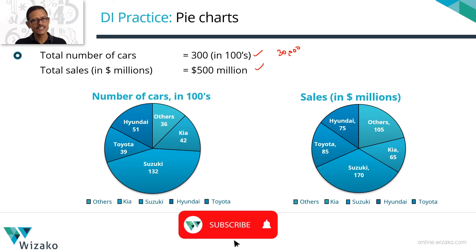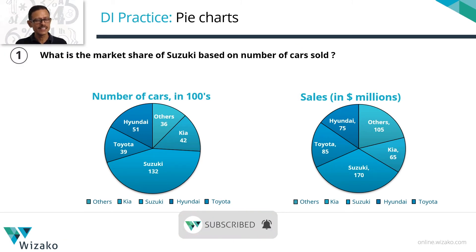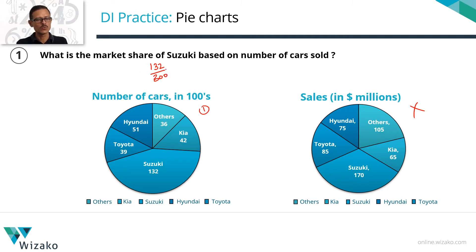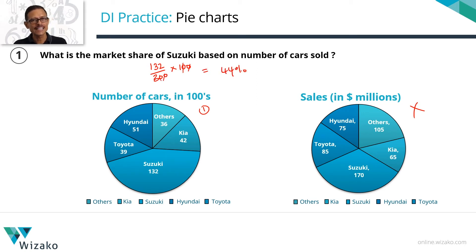Let's start with the three questions. Question one: what is the market share of Suzuki based on number of cars sold? Suzuki sold 132 hundreds out of a total of 300 hundreds. So market share is 132 divided by 300, multiplied by 100. The two zeros cancel, and 132 divided by 3 gives 44%. Suzuki's market share by number of cars is 44%.